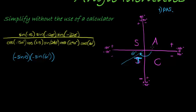Sine of negative 320 — negative 320 goes all the way past negative 270 into the first quadrant, where everything is positive, so sine would be positive. It's just 40 degrees short of 360, so this becomes positive sine of 40 degrees.